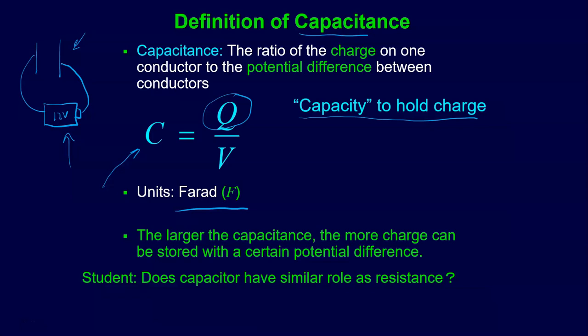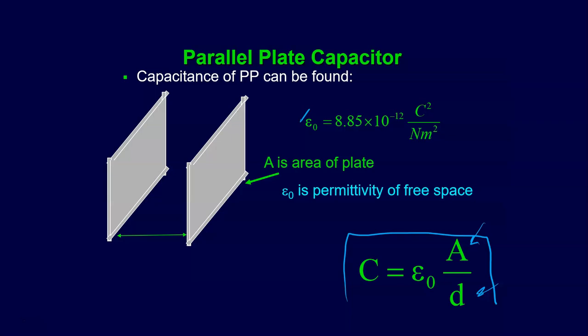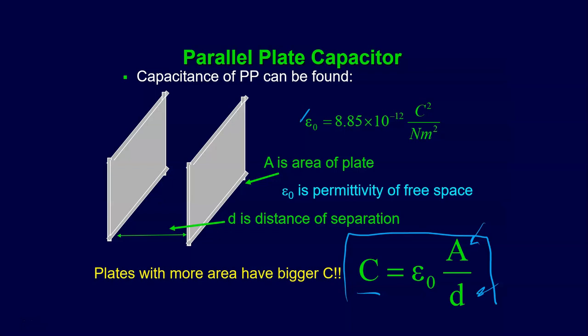Here's our definition of the parallel plate capacitor. We've already discussed the electric field of one of these. The capacitance of a parallel plate capacitor is epsilon-naught times the area of the plates divided by the distance of separation - A is the area, D is the distance. So if you have the geometry of your capacitor, you can determine its capacitance. Plates with more area have a bigger capacitance, and the closer the plates are, the bigger the capacitance.